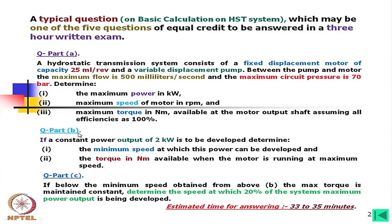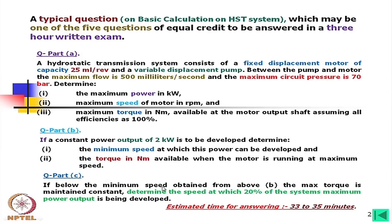The question also has Part B: if a constant power output of 2 kilowatts is to be developed, determine one, the minimum speed at which this power can be developed, and two, the torque in Newton meters available when the motor is running at maximum speed. Part C: if below the minimum speed obtained from Part B, the maximum torque is maintained constant, determine the speed at which 20 percent of the system's maximum power output is being developed.